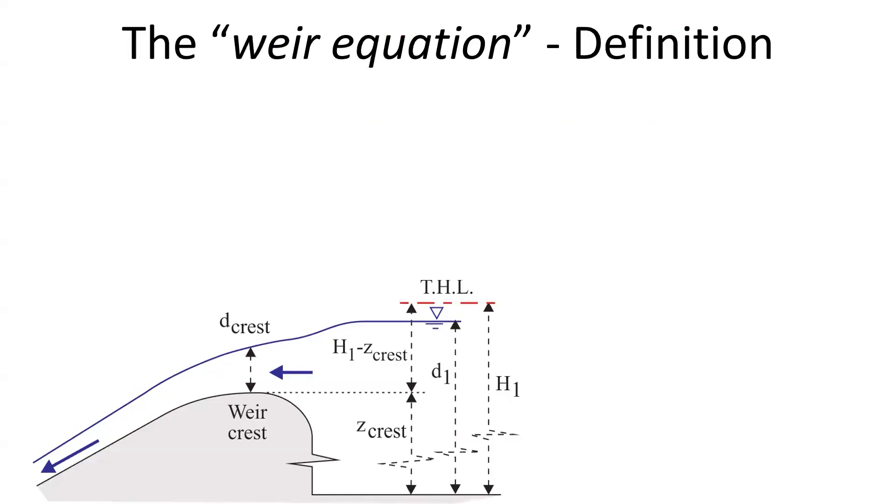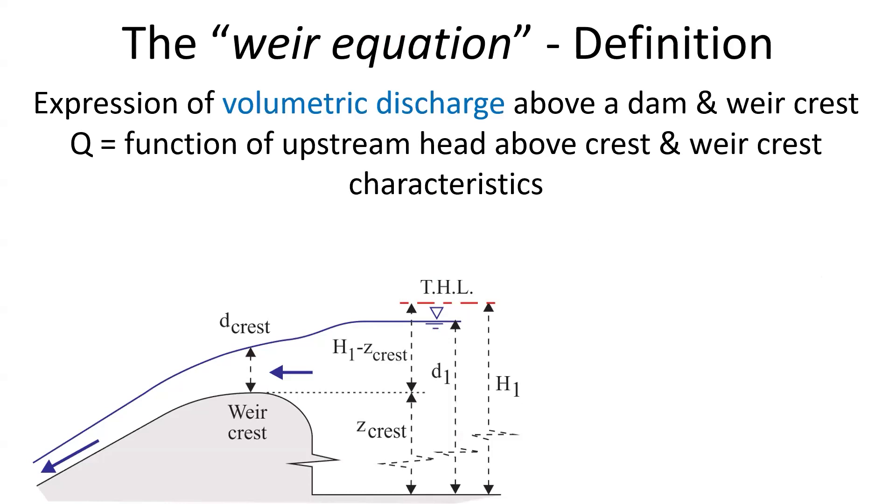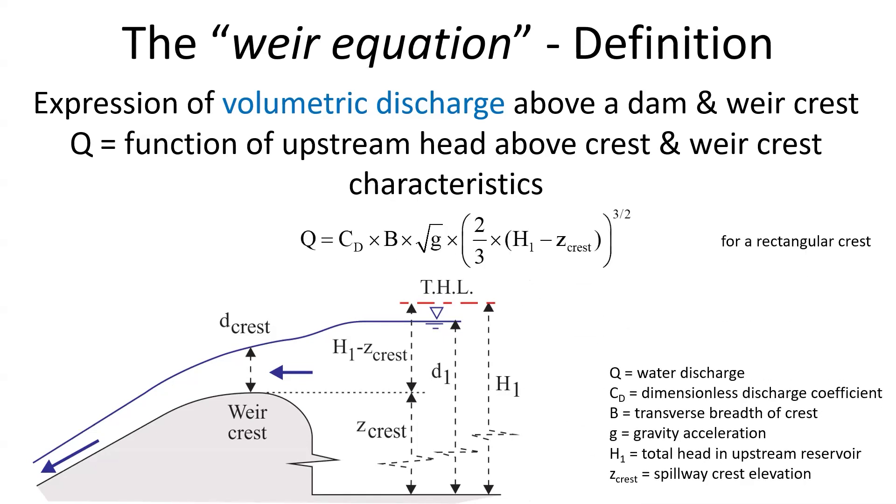The weir equation is a relationship linking the volumetric discharge above the dam or weir crest as a function of the upstream head above crest and weir crest characteristics, with here the classical expression for a rectangular crest that we are going to derive using relevant notation illustrated on the sketch.